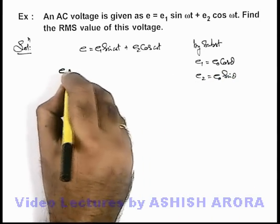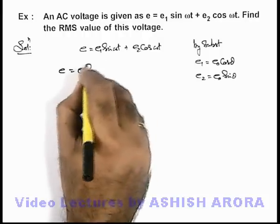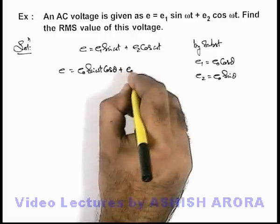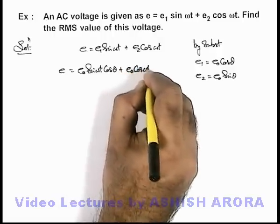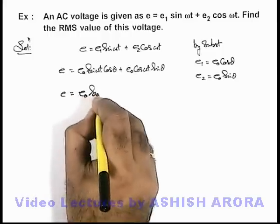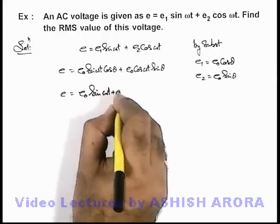See what we get here. This emf will become e₀ sine omega t cosine theta plus e₀ cosine omega t sine theta, which will reduce in the form e₀ sine of omega t plus theta.